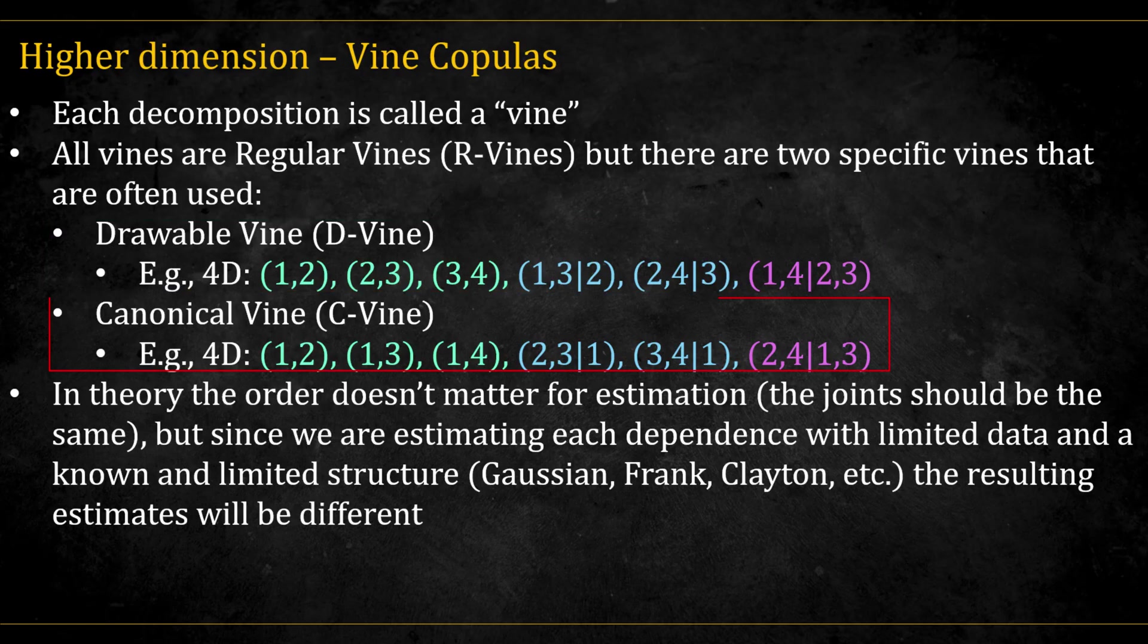The canonical vine, or the C vine, is a vine that is centered around a central variable. In this case, the first variable: 1, 2, 1, 3, 1, 4, etc.